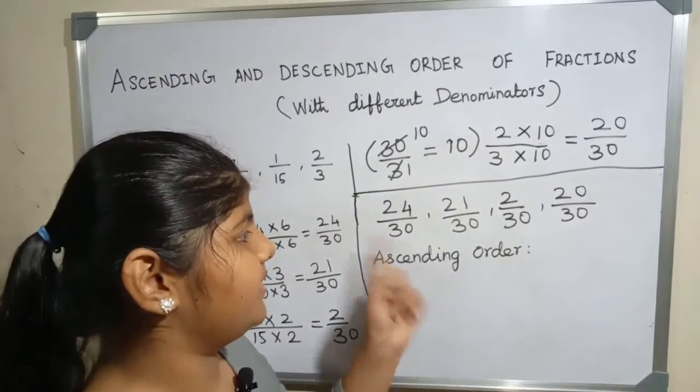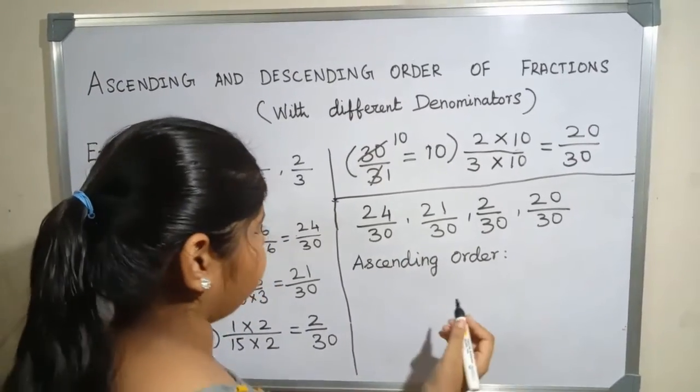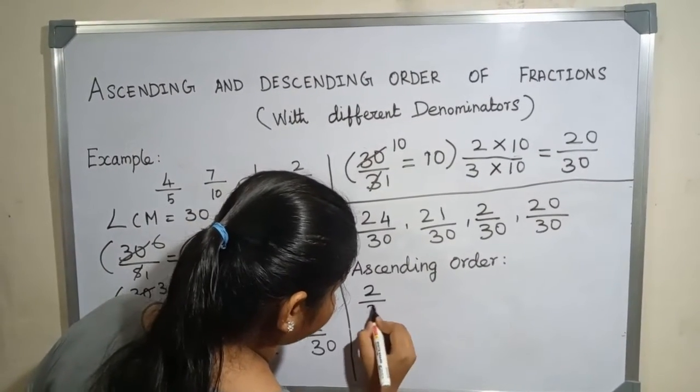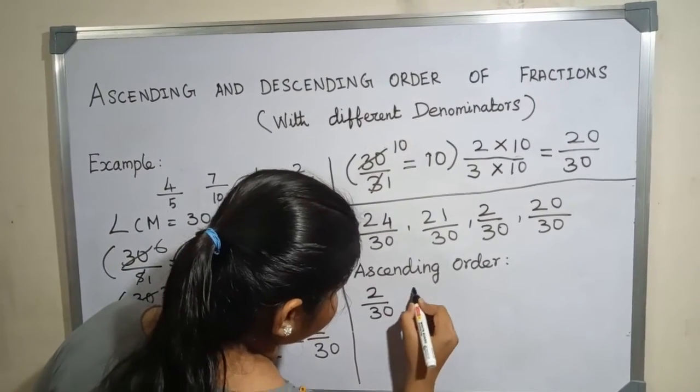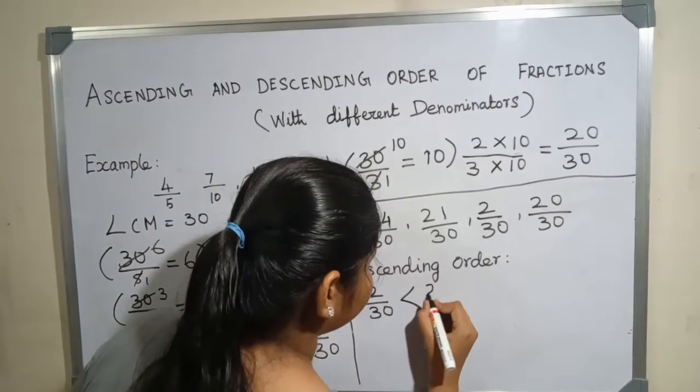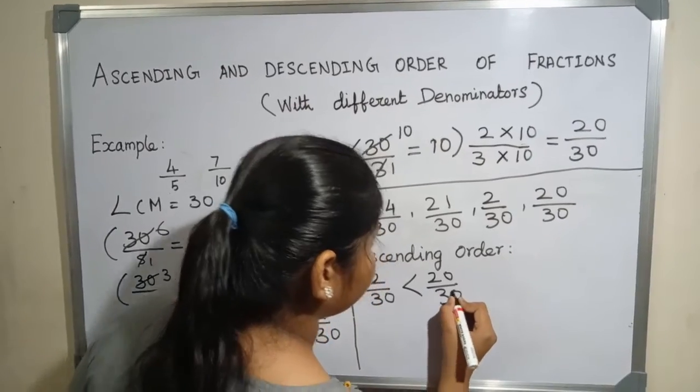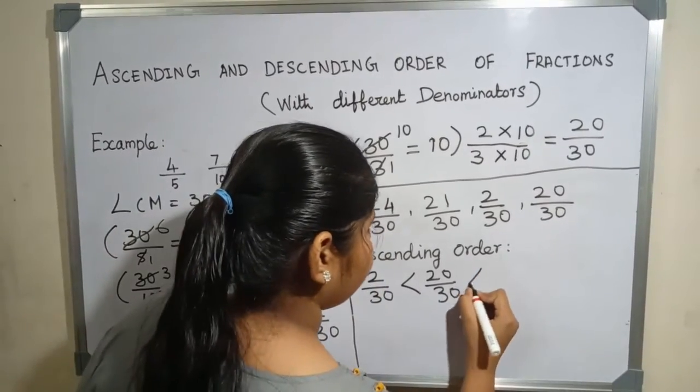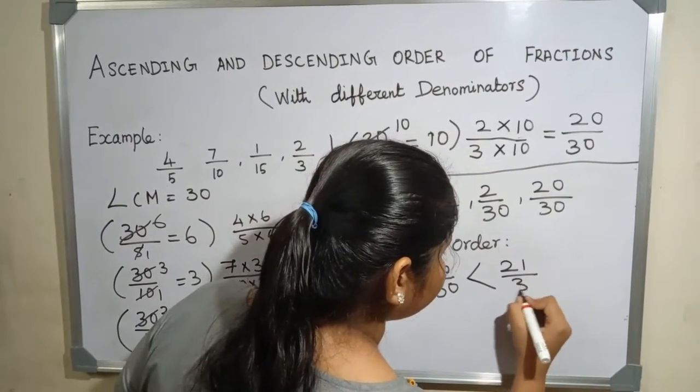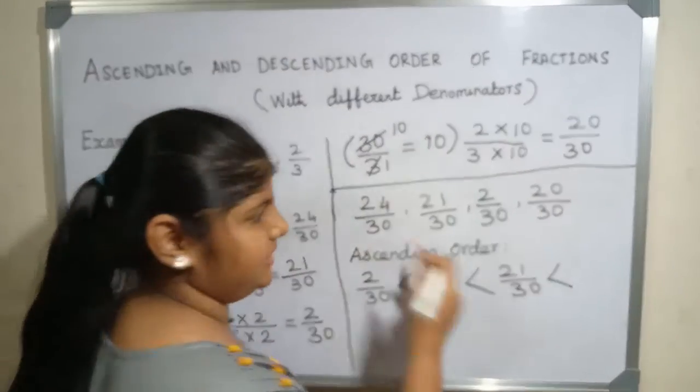Using numerator, let us arrange the fraction in ascending order. 2 by 30, 20 by 30, 21 by 30, 24 by 30.